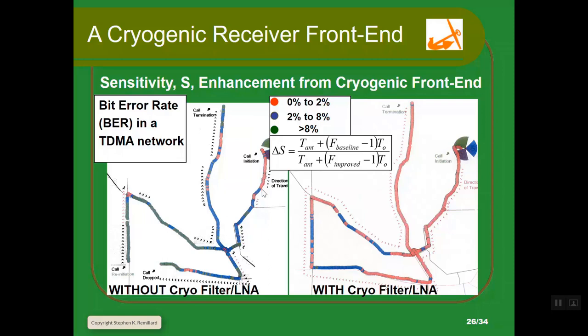Inside is vacuum and all the electronics is inside. There's external electronics for routing the RF signal to various places because we had up to six channels in one can, operated at 75 Kelvin. We installed it at the base station and then took a drive around with a test kit measuring the bit error rate in the TDMA signal. This was time division multiple access before everybody went to CDMA.